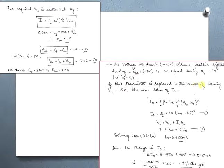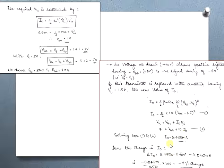If the transistor is replaced with one having a threshold voltage of 1.5 V, we recompute the drain current. With μN · COX · (W/L) unchanged, substituting the new VT gives ID = 0.455 mA. The change in ID is 0.455 − 0.5 = −0.045 mA, and the percentage change ΔID / ID_original × 100 = −9%.